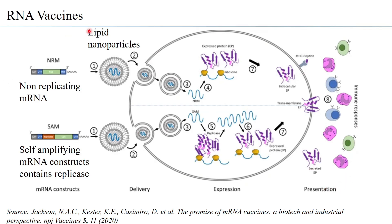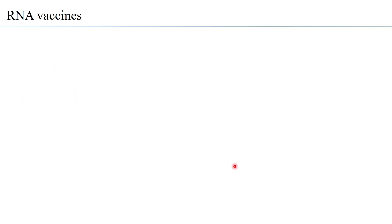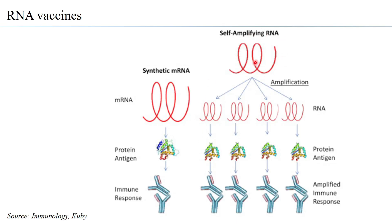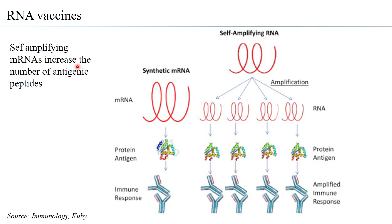RNA vaccines are today one of the major areas of vaccine research, especially given the COVID-19 situation. Self-amplifying mRNA produces multiple copies of the RNA, which in turn gets translated into multiple copies of the protein antigen, eliciting an amplified immune response. Self-amplifying mRNA therefore increases the number of antigenic peptides, which increases immunogenicity.